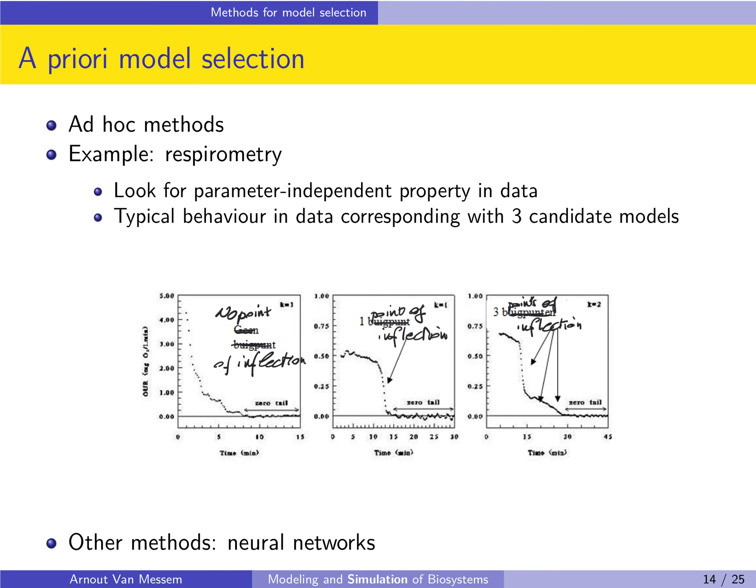For a priori model selection, what you normally do is look at the data you have collected and search for parameter-independent properties. You try to see if you recognize something in the data that gives you an indication of a possible model — for example, the shape of the data, increasing or decreasing properties, whether there are points of inflection, and how many — without delving deeper than what you can see in the scatterplot.